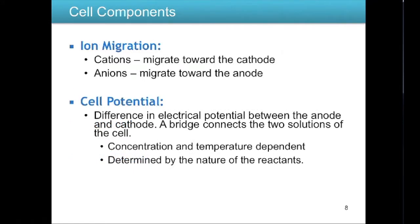Within the salt bridge there are ions — for example, potassium chloride. Potassium cations migrate towards the cathode (that's actually why it's called the cathode), and chloride anions move towards the anode. The cell potential — another word for voltage — is the difference in electrical potential between the anode and cathode, which depends on what they're made of. Essentially, we're building a rudimentary battery that could power a light bulb or other electrical device.